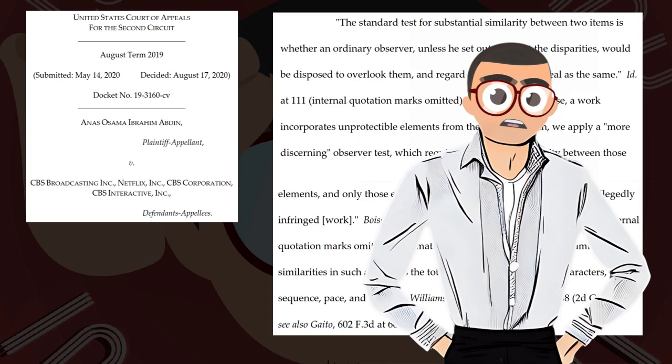To quote a more recent Second Circuit decision: 'The standard test for substantial similarity between two items is whether an ordinary observer, unless he set out to detect the disparities, would be disposed to overlook them and regard the aesthetic appeal as the same' — meaning compare the whole look and feel. However, where a work incorporates unprotectable elements from the public domain, courts apply a 'more discerning observer test,' which requires substantial similarity between only those elements that provide copyrightability to the alleged infringed work.